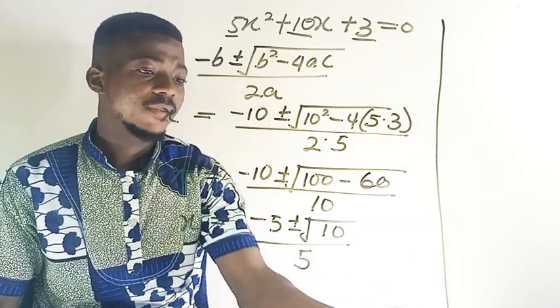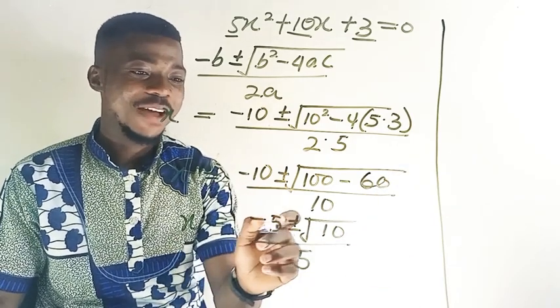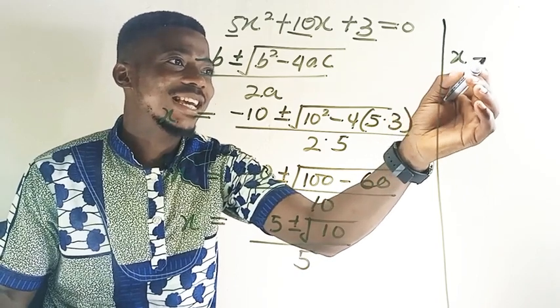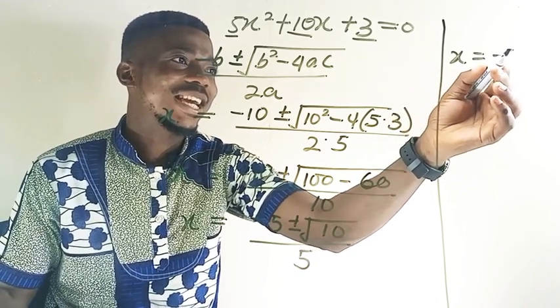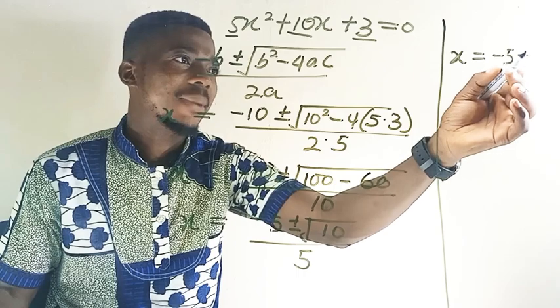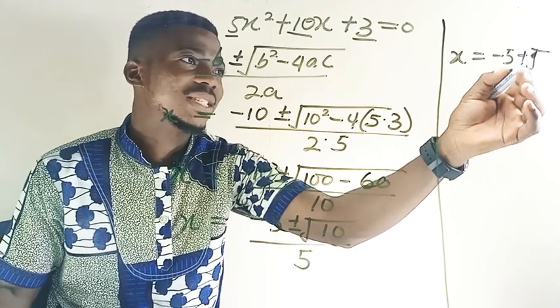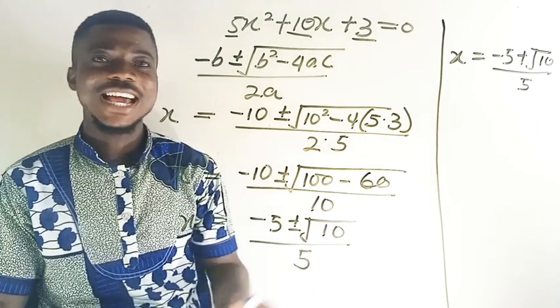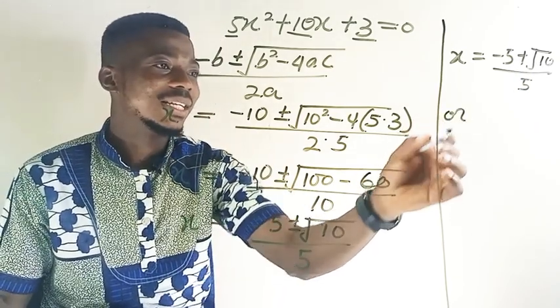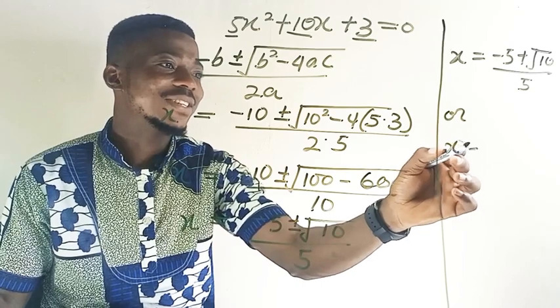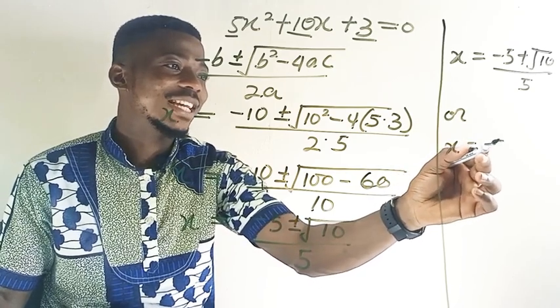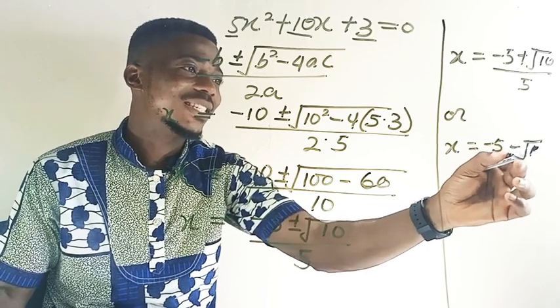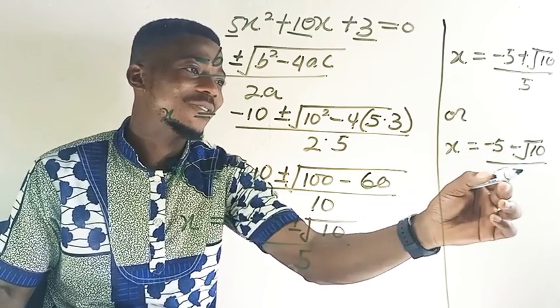Now you're done with the question. What you're going to do is to write the root of the equation. So let's write the root of the equation. We have positive and then negative so the first one x is equal to negative 5 plus root 10 all over 5. Then second one x is equal to negative 5 minus root 10 all over 5.